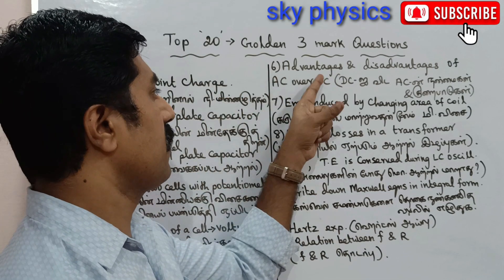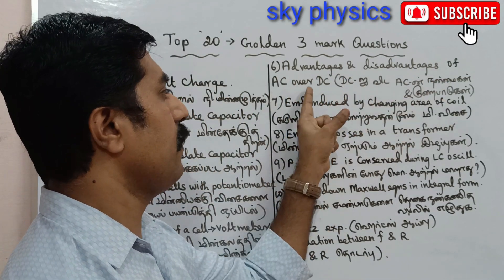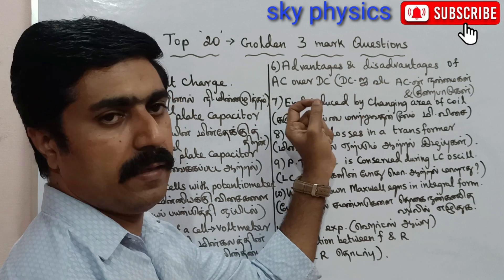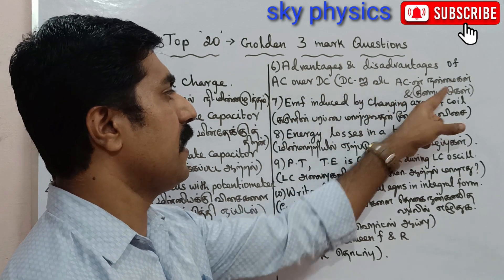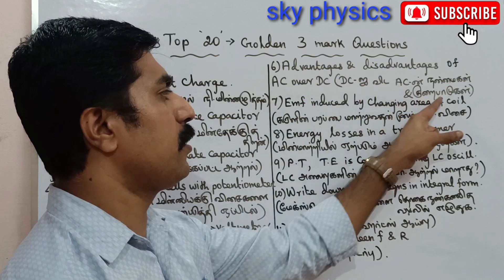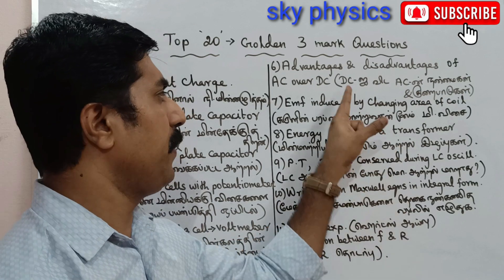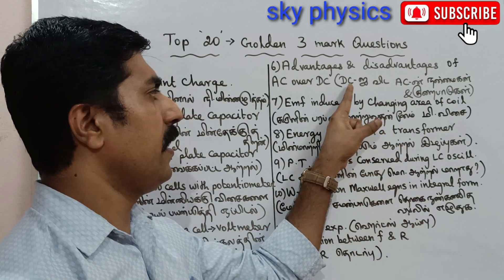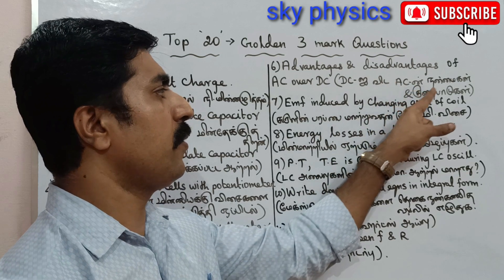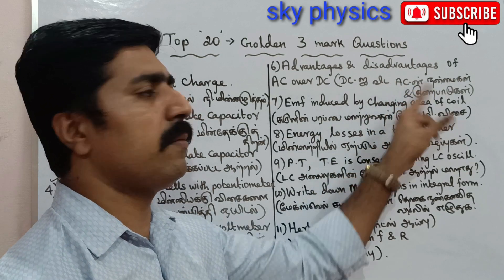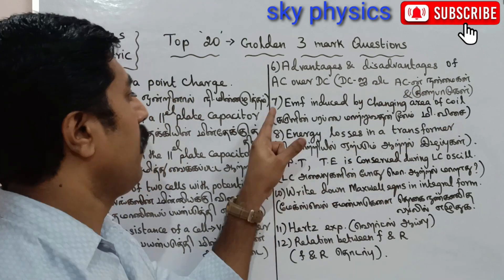Question number 6: Advantages and disadvantages of AC over DC. (Tamil: DC in comparison — AC in Nanmengal Matruum Kurai Padukal — Neerthisai Minnottathayi vida Maruthisai Minnottathin Nanmengal Matruum Kurai Padukal.)